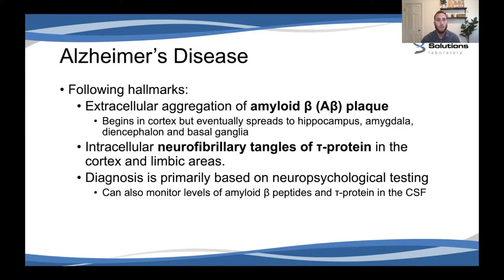At the cellular level, the following hallmarks are usually present: extracellular aggregation of amyloid beta plaque between neurons, which usually begins in the cortex and eventually spreads to the hippocampus, amygdala, diencephalon, and basal ganglia. Intracellularly, we see neurofibrillary tangles of tau protein in the cortex and limbic areas of the brain. Diagnosis is primarily based on neuropsychological testing, but clinicians can also monitor levels of amyloid beta peptides and tau protein in CSF fluid via a spinal tap.